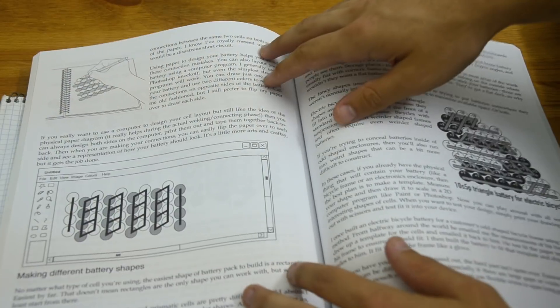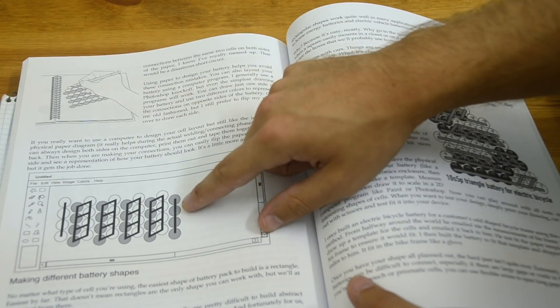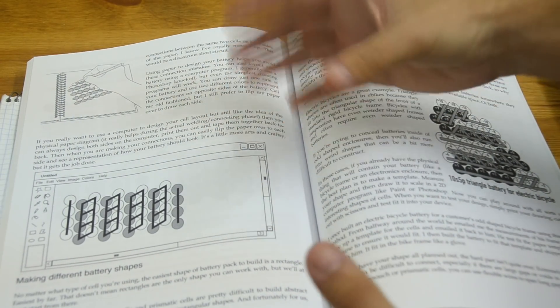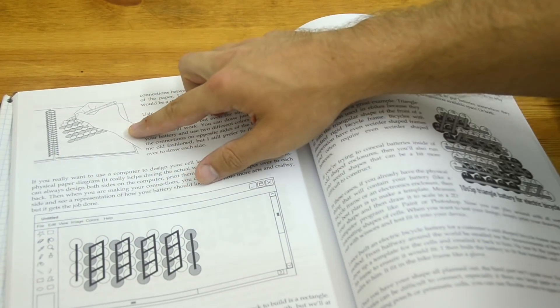So now we need to move on to our next step, which is planning the layout of our cells. I normally like to design my batteries on the computer here, but because I'm doing sort of an odd shape, I think it's going to be easier just to draw it out on paper. I'll demonstrate how I do that here.